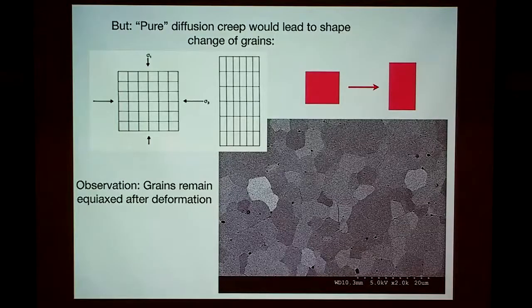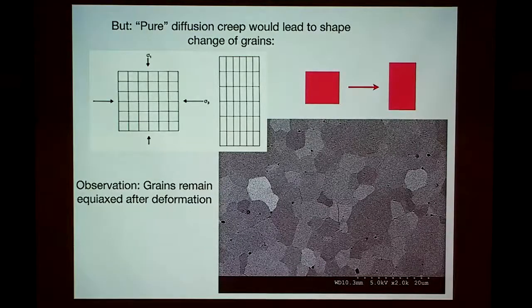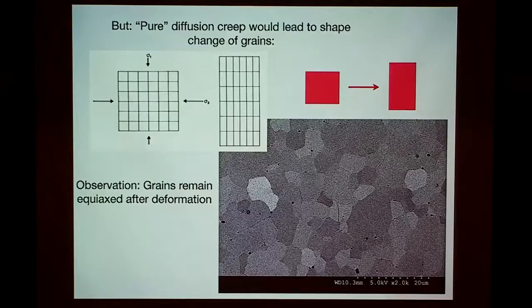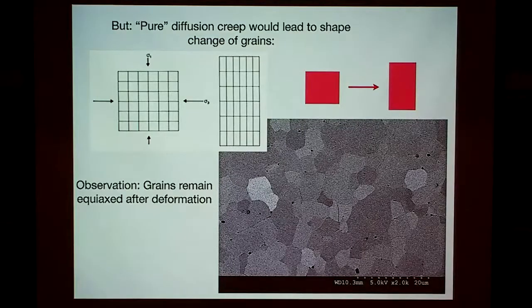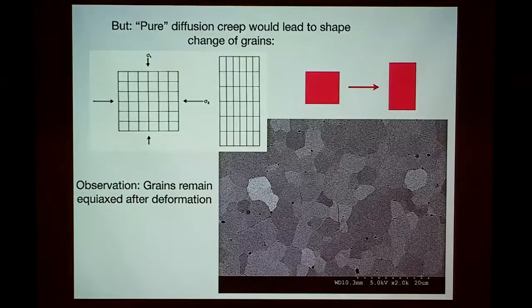They put a mesh on the sample to track individual grain positions, put the sample back together, deform it, take it apart again, and look at how the mesh has changed — tracking internal deformation. That's a lot of work and very complicated. Most of these models come from materials science where things are a bit easier to track. The scale bar here is 20 microns, mean grain size around 5 microns. They used more coarse-grained calcite — maybe 30 microns or coarser — carrara marble.